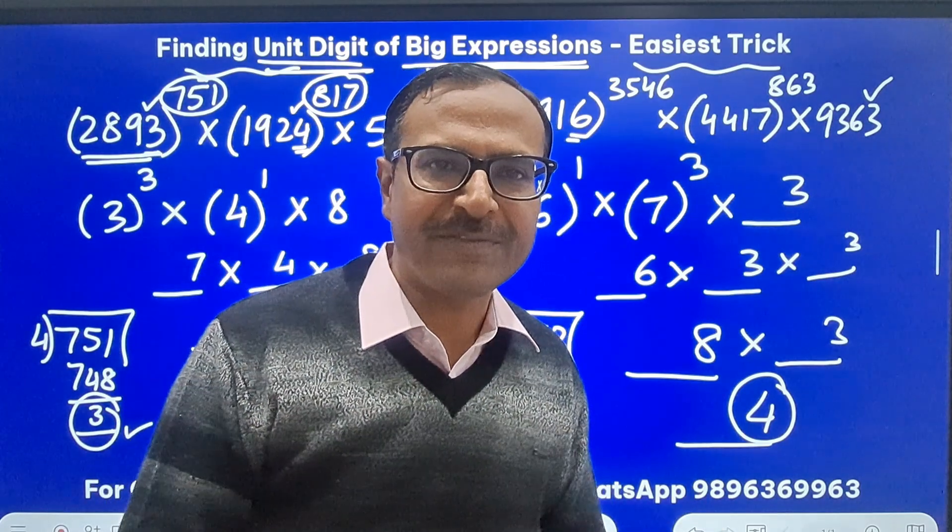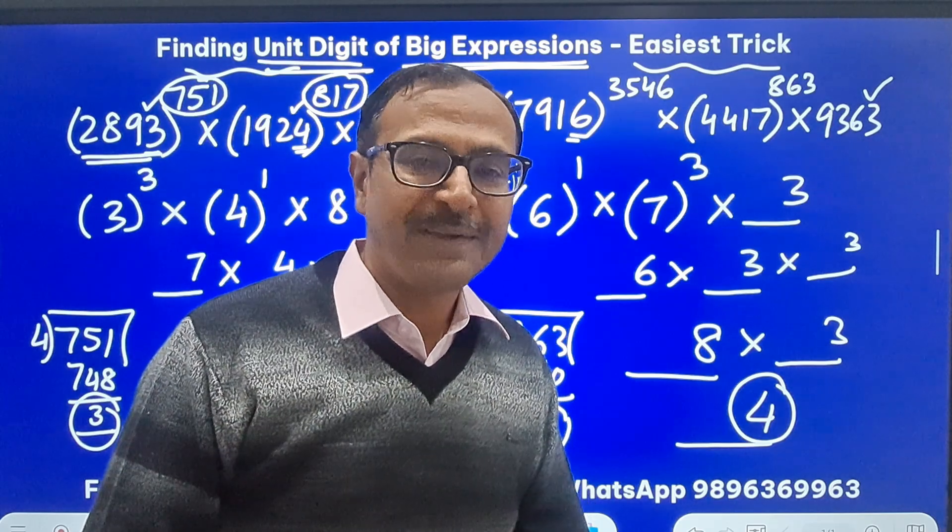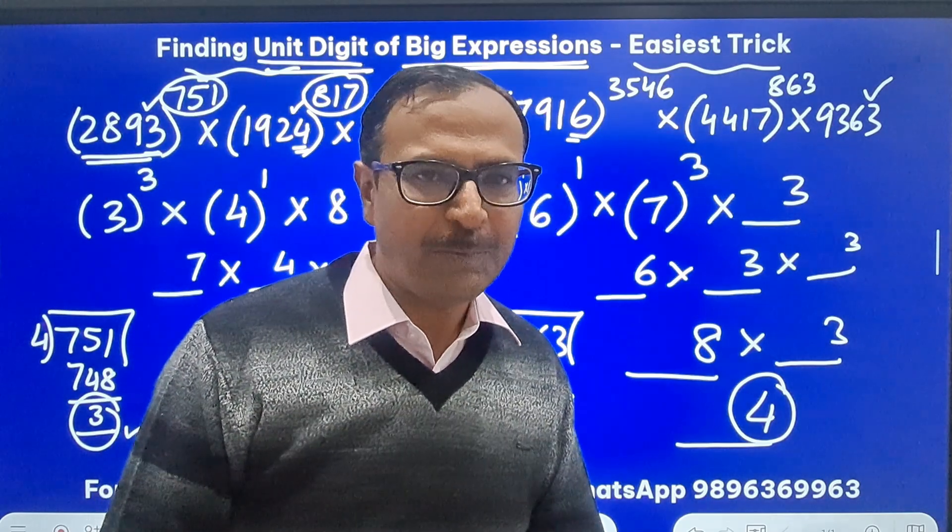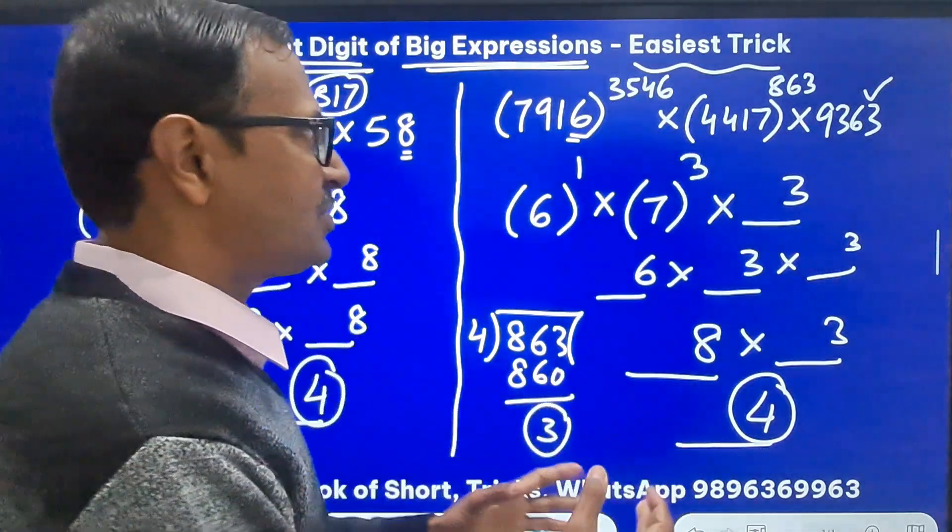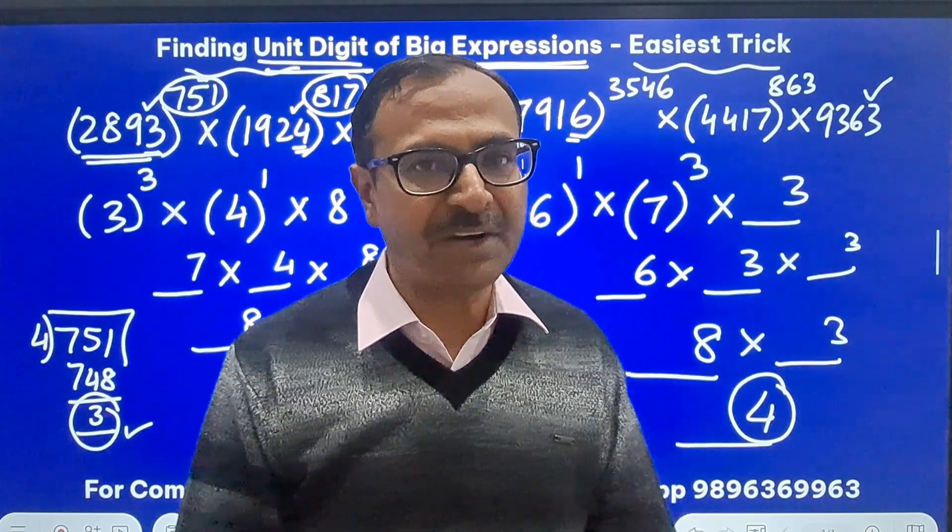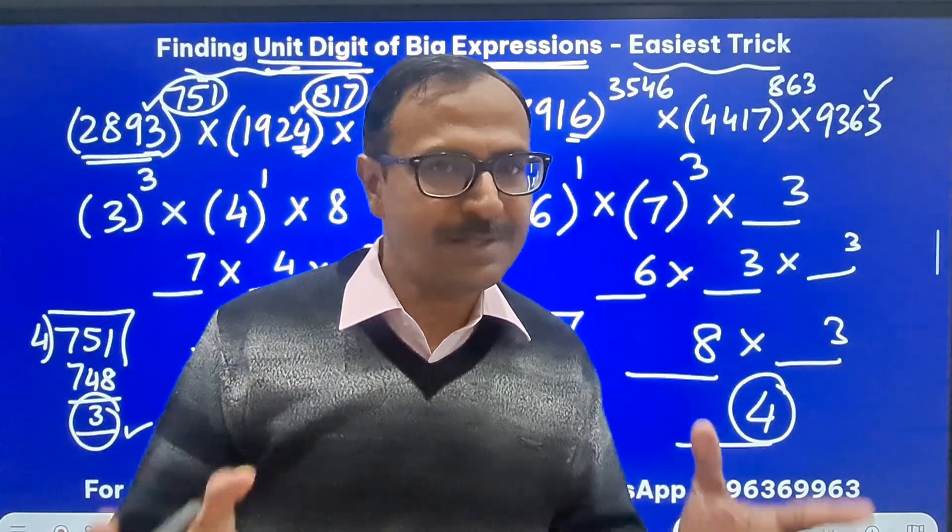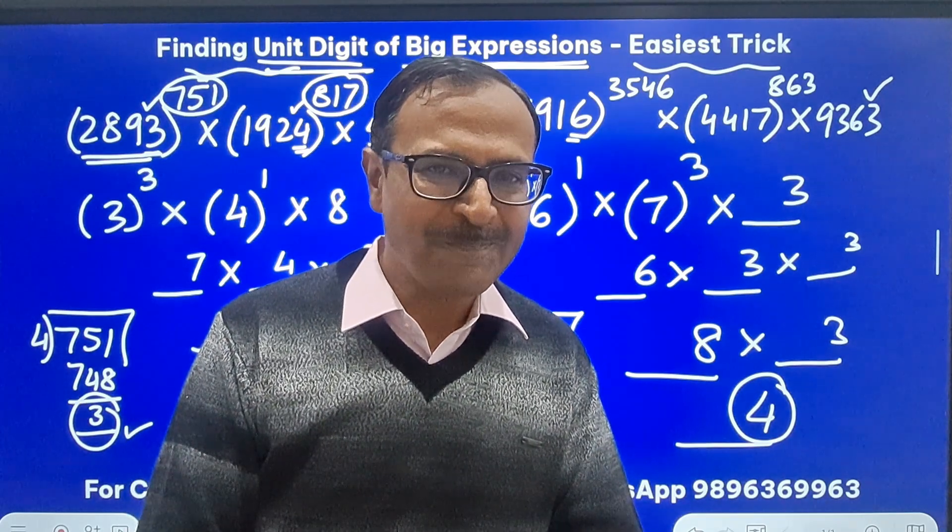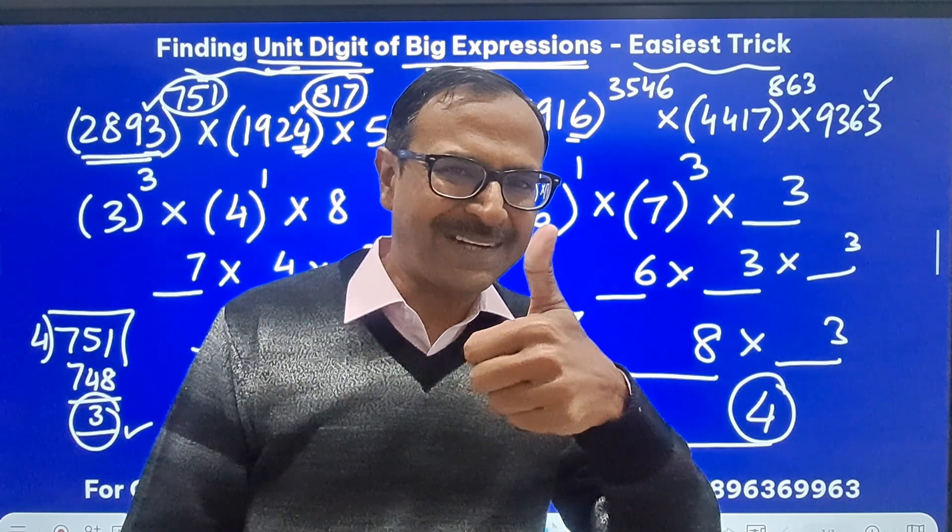No calculation is difficult friends. It's here in the mind. If you know some basic rules this is not going to trouble you anymore. So try these methods on some more big expressions and you will realize that this is indeed the easiest trick to find the unit digit of any such large calculation. So let me know in the comments whether this benefited you or not and all the best for your practice.